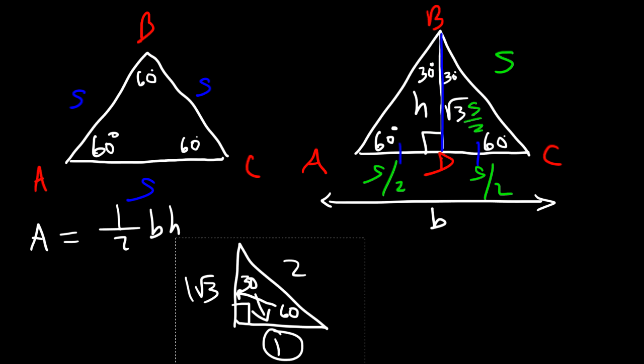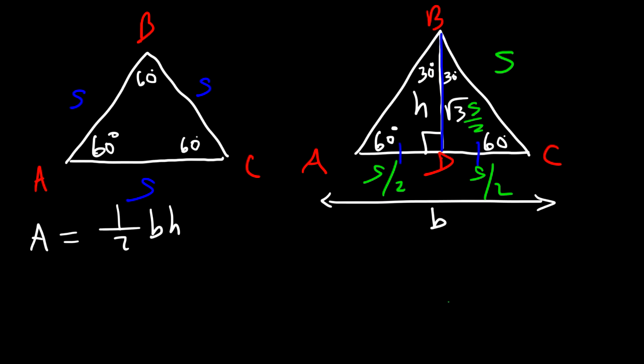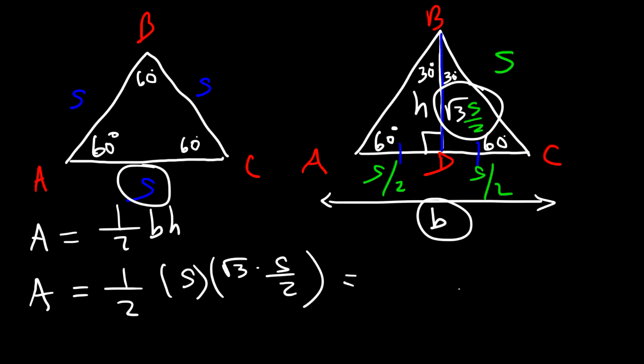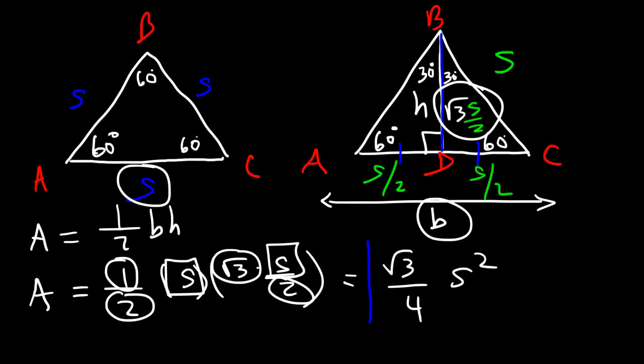So now we have enough information to derive the formula. So we said that the base is S, and the height is the square root of 3 times S divided by 2. So right now we have 1 times the square root of 3, and on the bottom we have 2 times 2, which is 4. And then S times S is S squared. And so now you know how to derive the formula for an equilateral triangle. That's it. Thanks for watching.